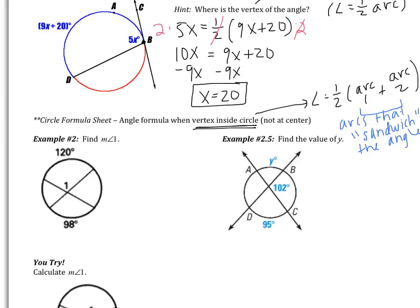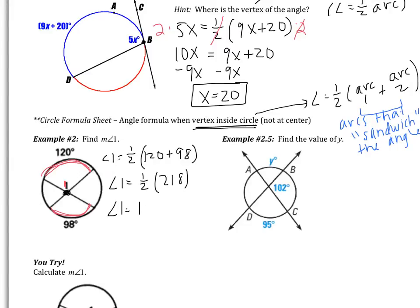In example 2, the vertex is inside the circle but not at the center. Angle 1 is equal to one half of the two arcs that sandwich it. One arc is like one piece of bread, the other arc is the other piece. So it's going to be one half of 120 plus 98, giving me one half of 218, which equals 109 degrees.